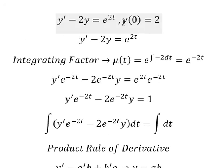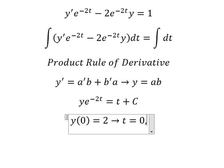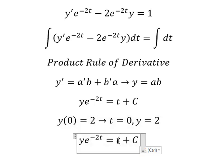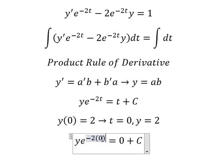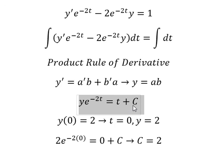Now we have the conditions. That means when t equals to 0, y equals to 2. So I will put 0 here, 0 here, 2 here. So C equals to 2 and I will put 2 here.